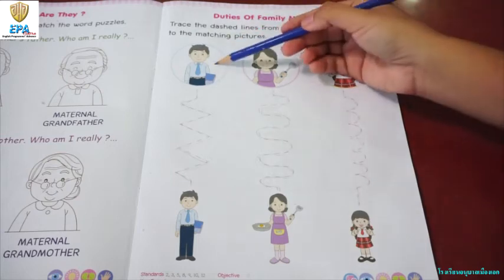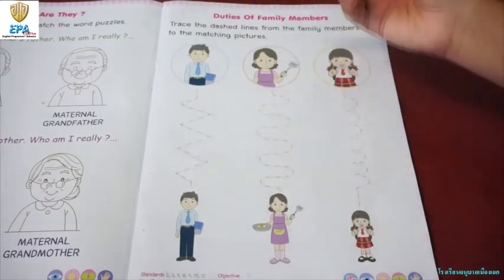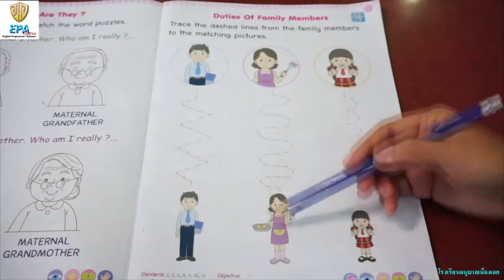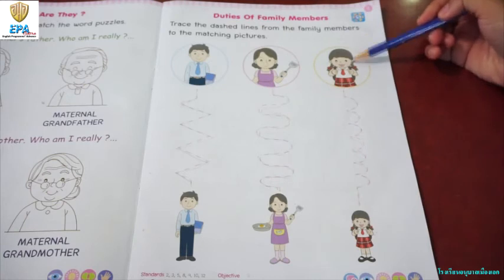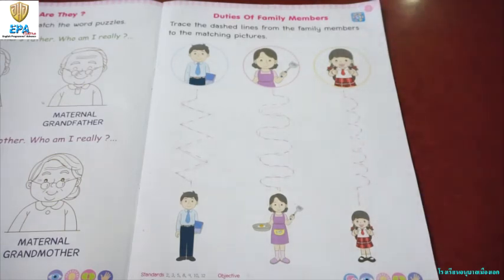Again, the father works for the family. The mother takes care of the family. And the child needs to go to school and learn. That's the duties of the family members.